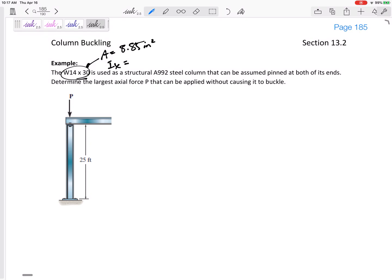The IX is 291 inches to the fourth, and the IY is 19.6 inches to the fourth, and that is just from the shape of the cross section.